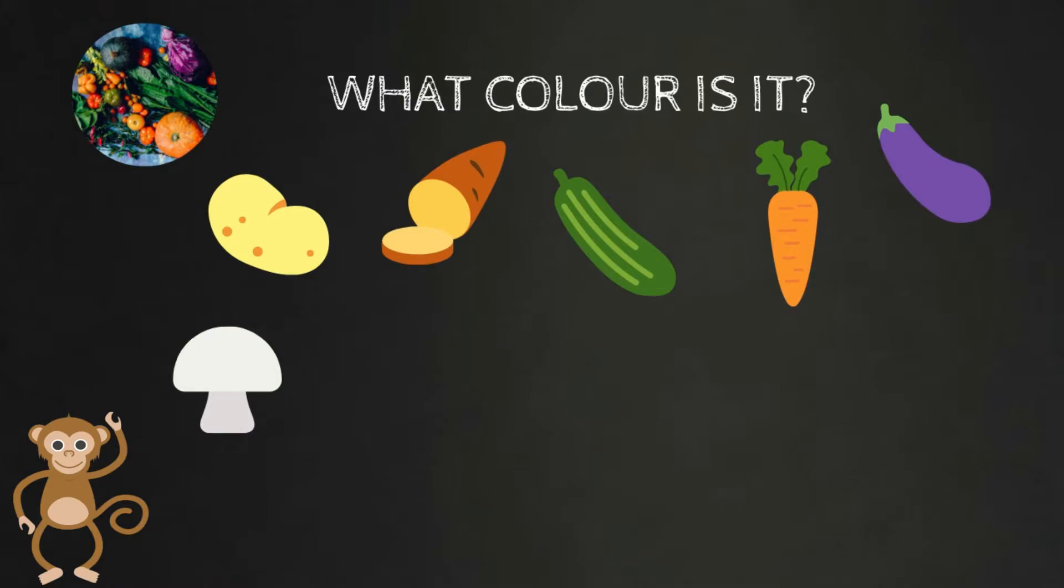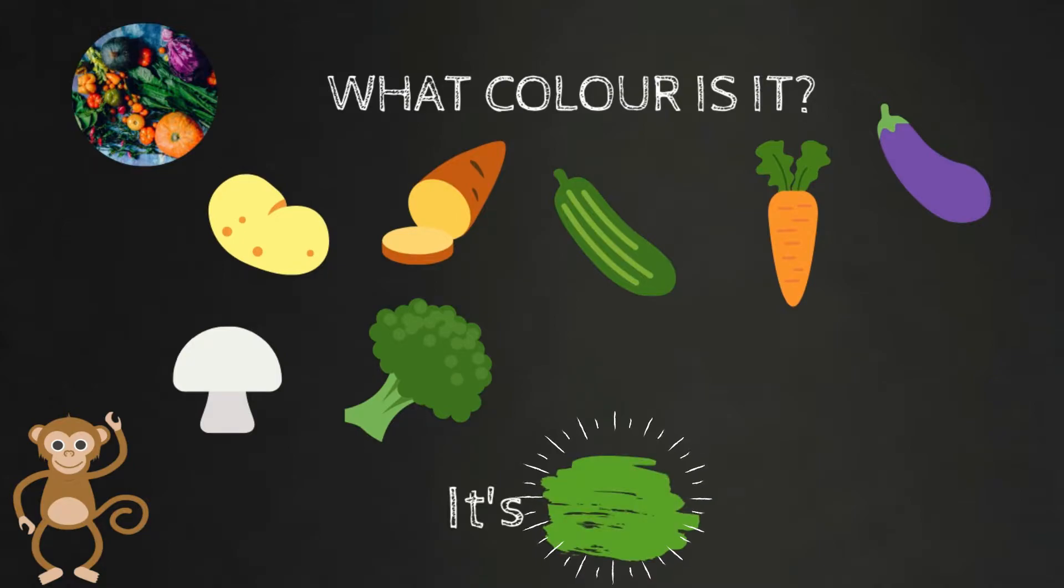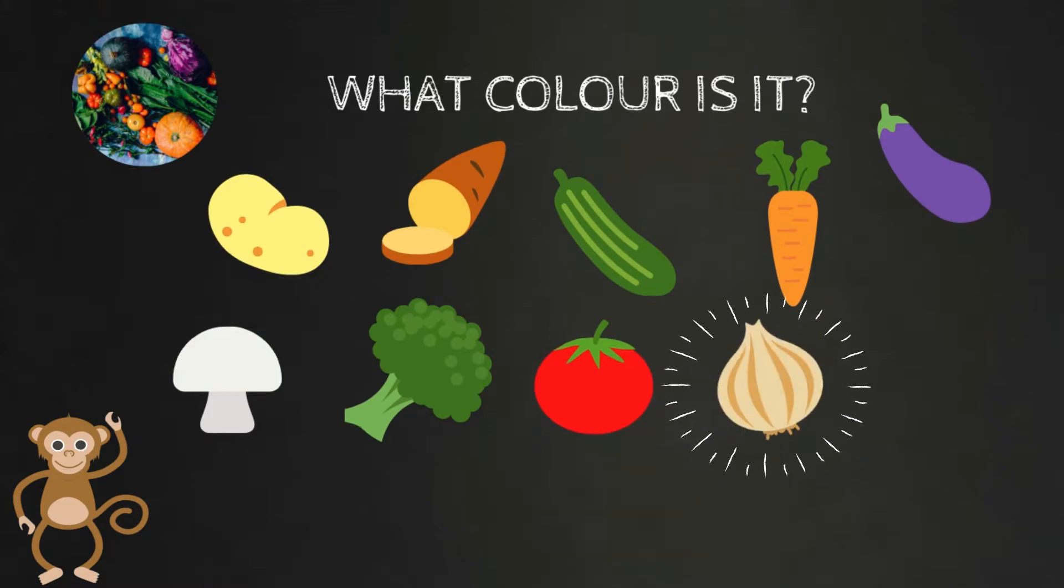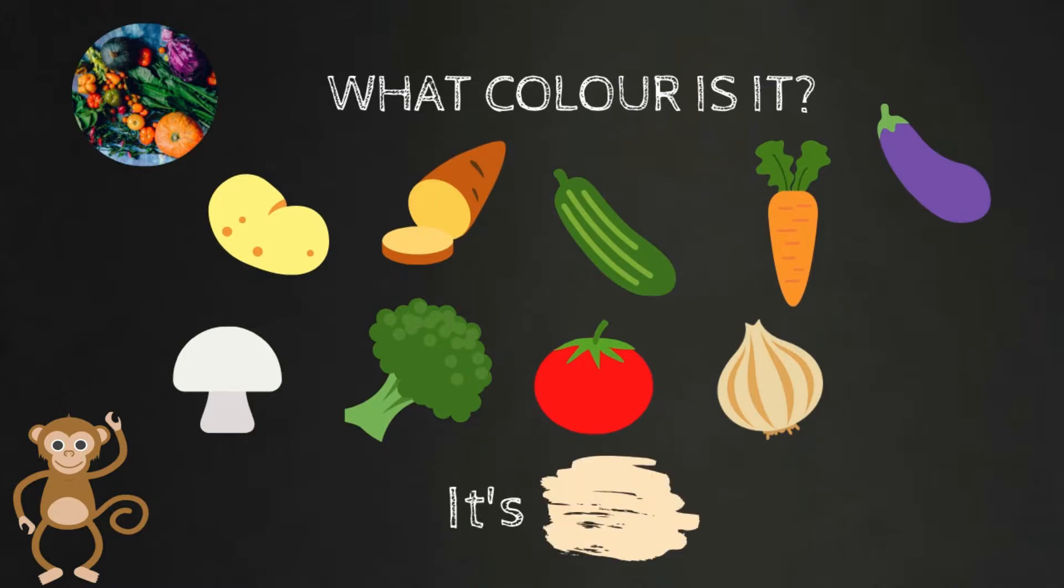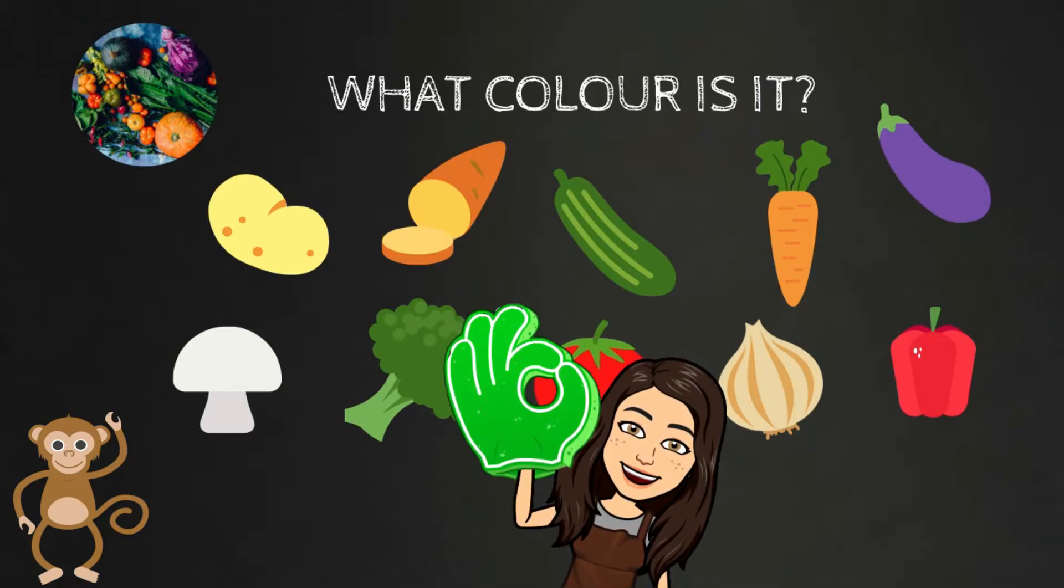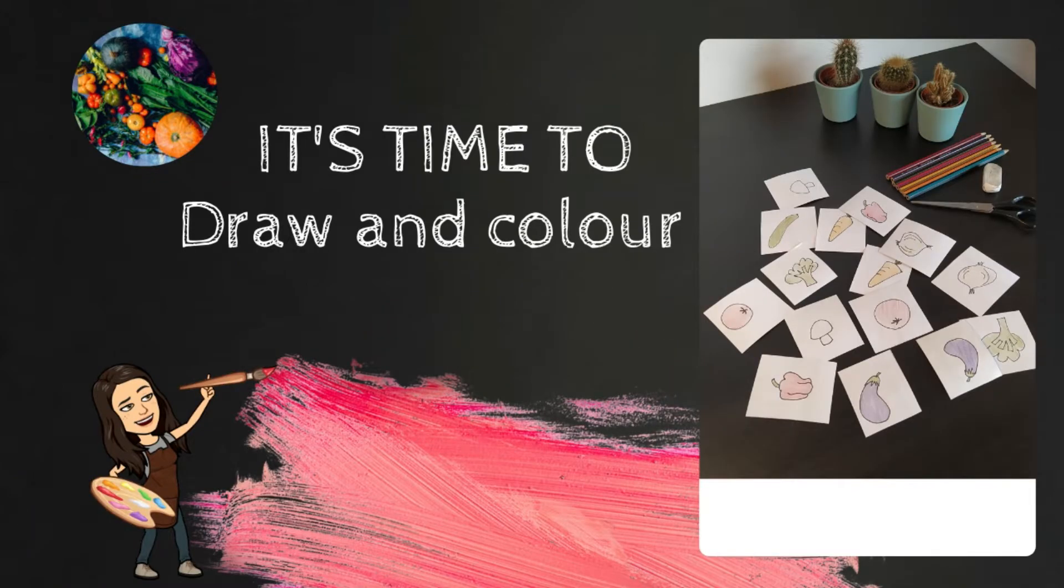This is a mushroom. What color is it? It's white. This is broccoli. What color is it? It's green. This is a tomato. What color is it? It's red. This is an onion. What color is it? It's white. This is a pepper. What color is it? It's red. It's time to draw and color.